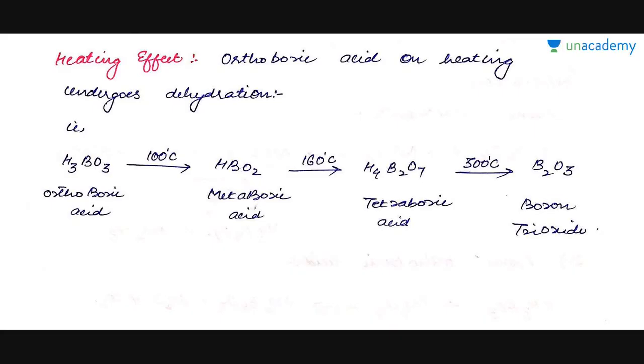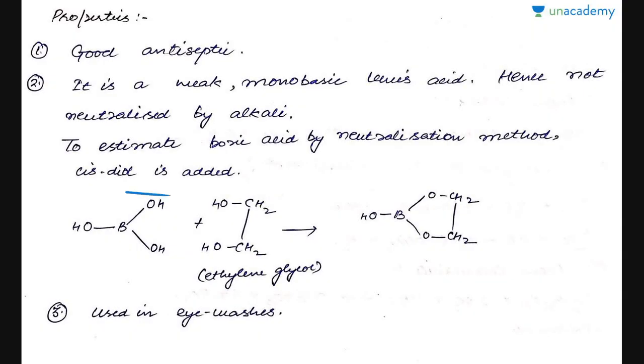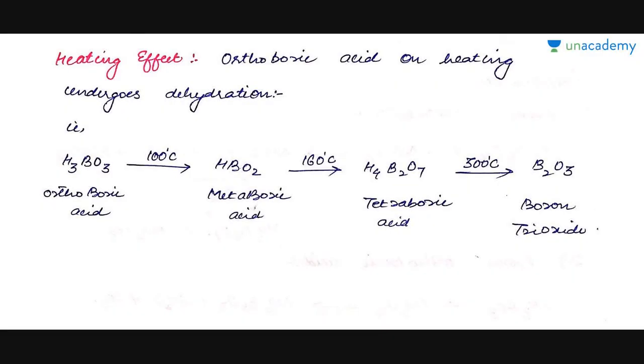Next is what are the effects of heating on the structure of boric acid. Boric acid has a simple structure of three OH groups attached to one boron atom. When it is heated at 100 degrees centigrade it forms HBO2.